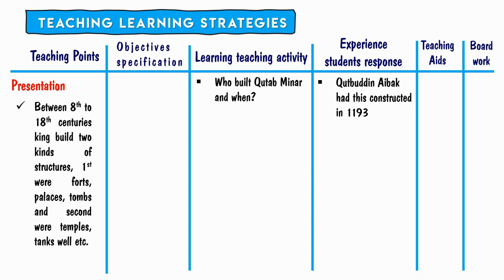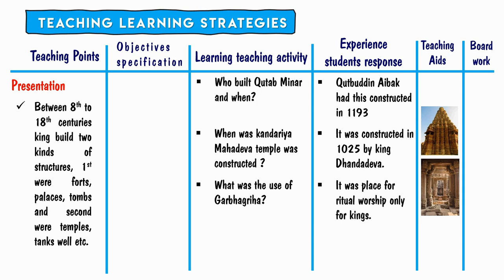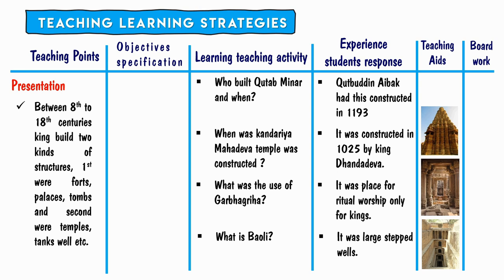Between the 8th and 18th centuries, kings built two kinds of structures: first, forts, palaces, and tombs; and second, temples, tanks, and wells. The teacher asks: 'When was the Kandariya Mahadeva temple constructed?' Answer: 'It was constructed in 1025 by King Dandadeva.' 'What was the use of Garbhagriha?' — 'It was a place for ritual worship for kings.' 'What is a Baoli?' — 'It was a large stepped well.' The objective is knowledge recall.